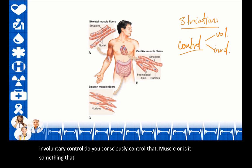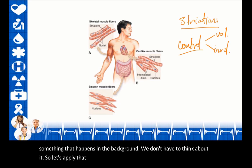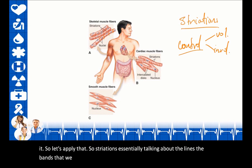The three types of muscle are essentially unique combinations of two major characteristics: striations and control. Each muscle type will have either striations or no striations. For control, we're talking about voluntary versus involuntary—do you consciously control that muscle, or does it happen in the background without you thinking about it?